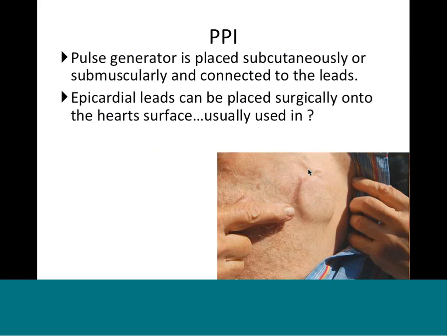Typically the pulse generator is placed subcutaneously - under the skin, sometimes under the muscle - and it's connected to the leads. When we take the leads and put them into the vein, like the subclavian vein and then into the heart, that is what is called transvenous. But you can have a situation where you take epicardial leads - not going through the vein, but putting them surgically on the surface of the heart.